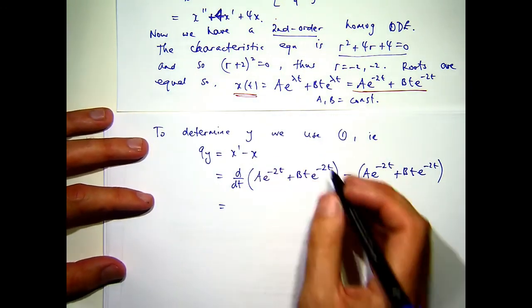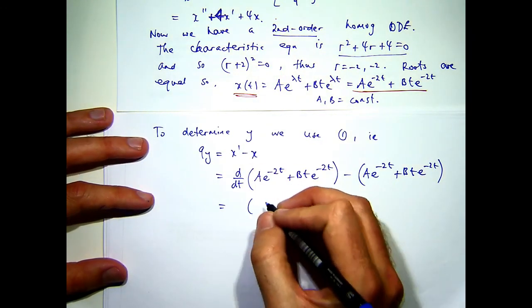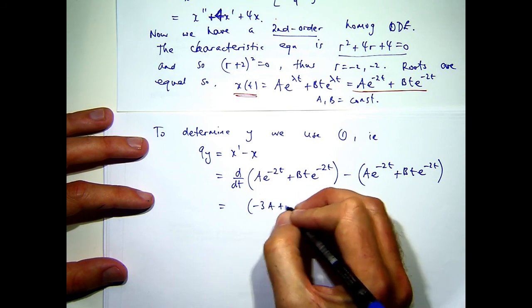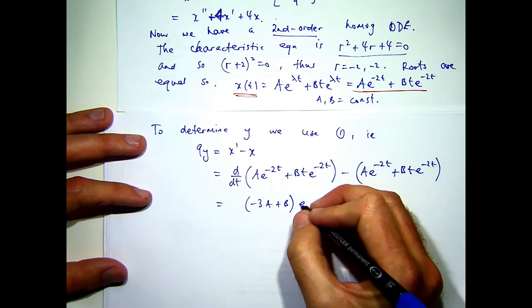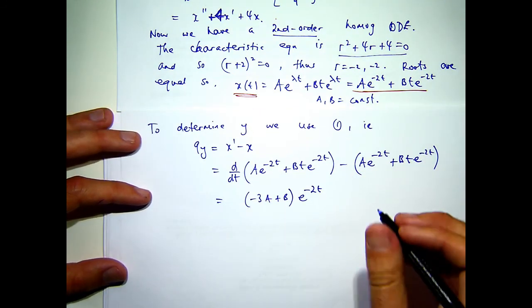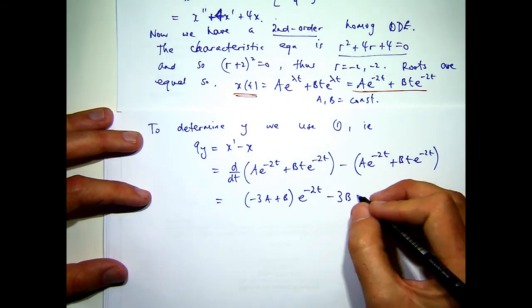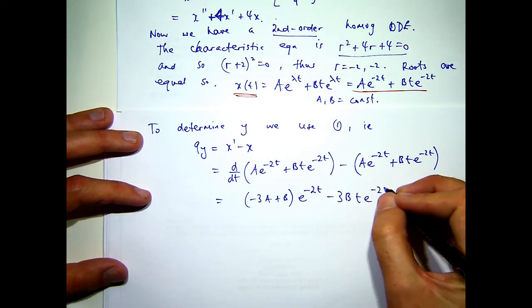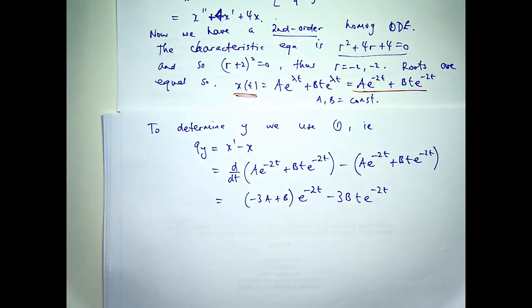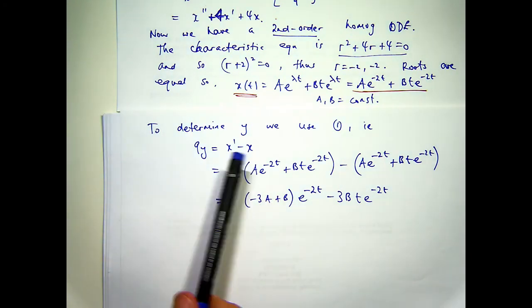So if I differentiate and just simplify a little bit, I'll get the following. So to get y, all I do is divide both sides by 9.